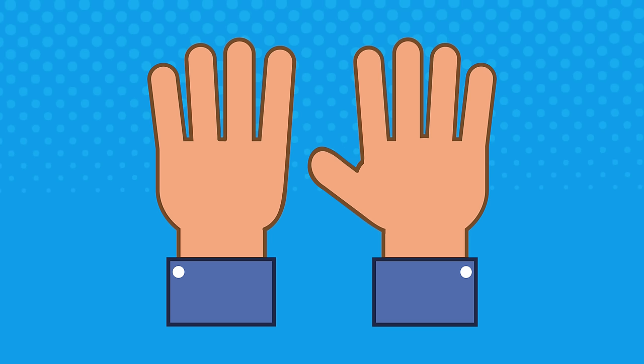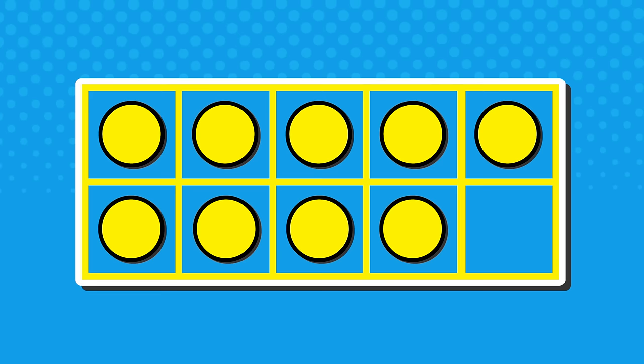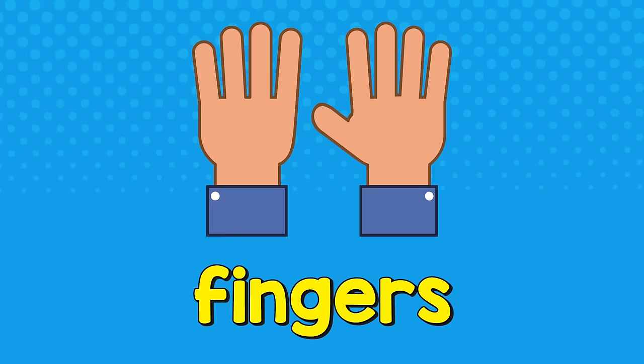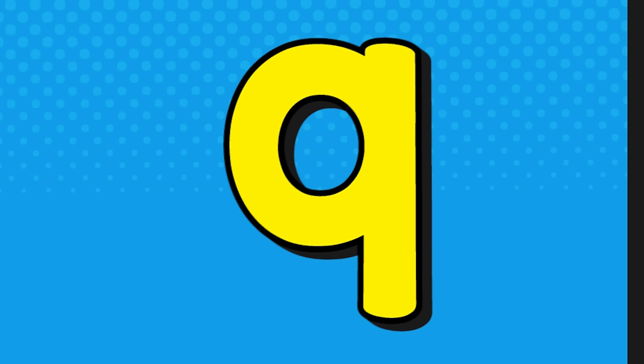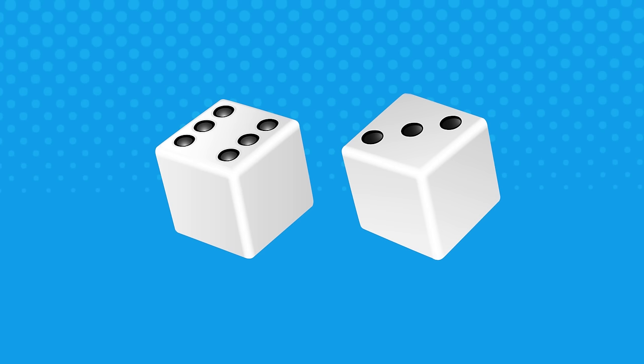Now you answer before me — how do we show 9? Fingers. Domino. 10 frame. Tally marks. Fingers. Fingers. Fingers. Numeral. Fingers. Dice. Fingers. Number line. Fingers. Picture.